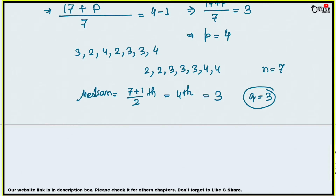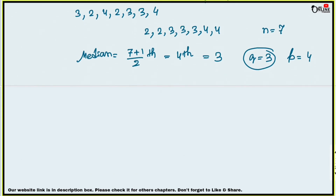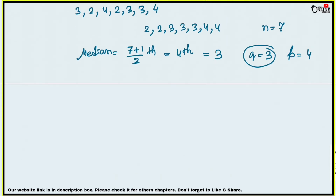Now find the mean of p and q. p = 4 and q = 3. Mean of p and q = (4+3)/2 = 3.5. That is your answer.